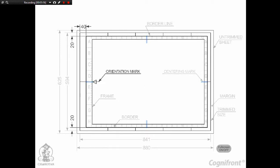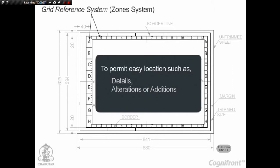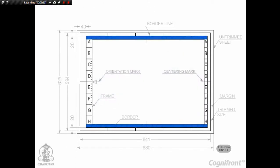Four centering marks are drawn to facilitate positioning of the drawing for reproduction purposes. The orientation mark coincides with one of the centering marks, which can be used for the orientation of the drawing sheet on the drawing board. The grid reference system is drawn on the sheet to permit easy location of details, alterations or additions. The rectangles of the grid along the length are referred to by numerals 1, 2, 3, and along the width by capital letters A, B, C, D, etc.